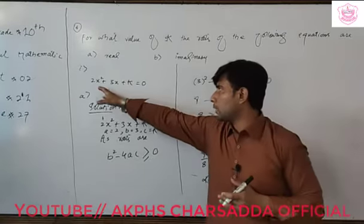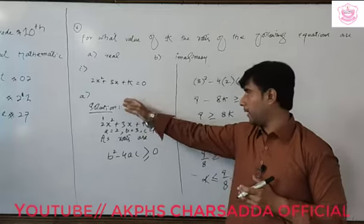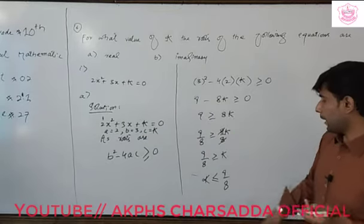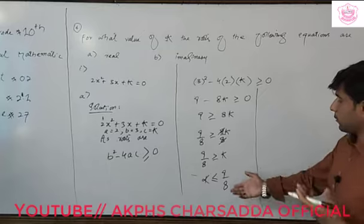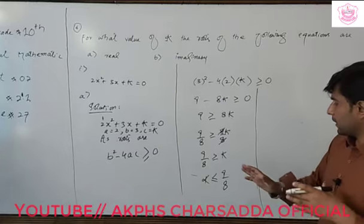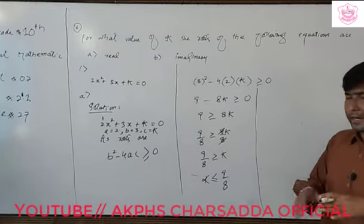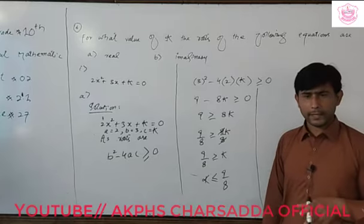We can also write this as k is less than or equal to 9 by 8. So when the roots are real for this equation 2x square plus 3x plus k, the value of k will be equal to 9 by 8 or less than 9 by 8.